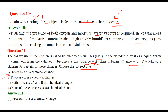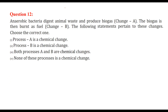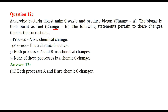Anaerobic bacteria digest animal waste and produce biogas - that is process A. The biogas is then burnt as fuel - that is process B. The correct answer is that both processes A and B are chemical changes. When animal waste produces biogas, there is a proper chemical change because you cannot convert biogas back to animal waste. Similarly, when biogas is burned as fuel, the products are totally different and you cannot convert them back to biogas - it is irreversible. So both processes A and B are chemical changes.